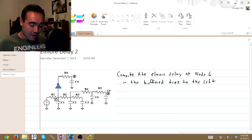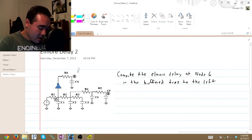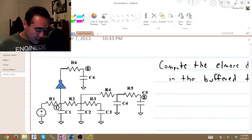It wants us to find the Elmore delay at Node 6 by using this buffer tree. So what exactly does the buffer add to our circuit? Well, let's go ahead and take a look.